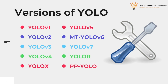After YOLO V3, Joseph Redmon quit the YOLO project, stating that computer vision was too powerful and could be misused. So YOLO V4 was not released by Joseph Redmon, but by Alexei. YOLO V5 was released in 2020 by the company Ultralytics, just a few days after YOLO V4. YOLO V6 and V7 were released in 2022. There have also been variants released in between, like YOLO R, YOLO X, and PP YOLO, each with their own improvements over previously released versions.